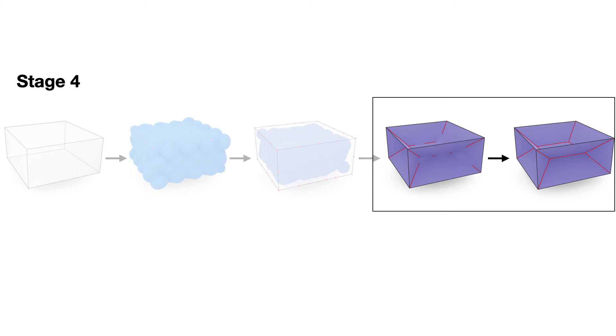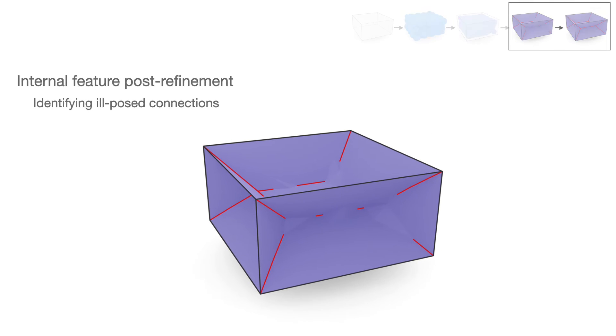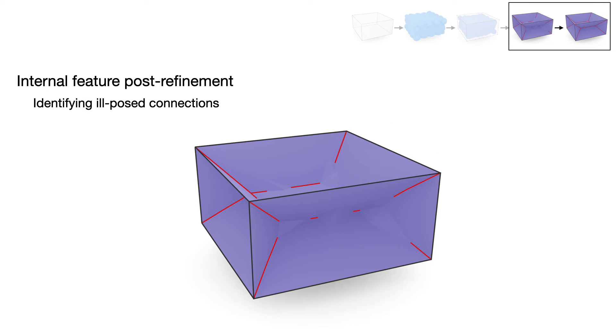In the fourth stage, the initial medial mesh is further refined. To refine the internal features, we detect these ill-posed connections under the help of their RPCs.